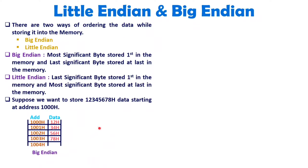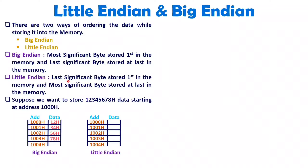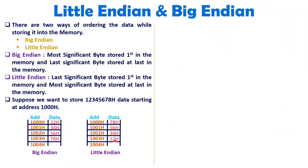Now if we talk about Little Endian, in that we are storing the least significant byte first in the memory. So at address 1000 hex, the least significant byte 78 hex is stored. And as address is increasing, at the last address we will be storing the most significant byte, that is 12 hex, stored at 1003 hex.